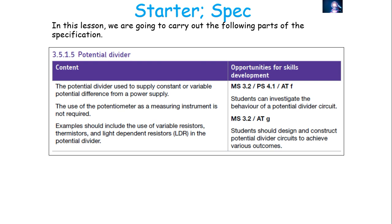In this part of the specification you've got to be able to define what a potential divider is and investigate the behaviour of a potential divider circuit, and then look at different examples of things in a potential divider circuit, such as a variable resistor, a thermistor, and an LDR.